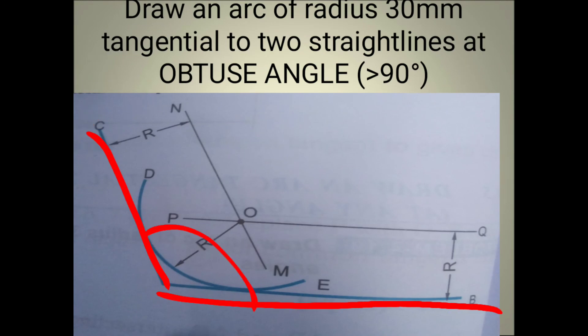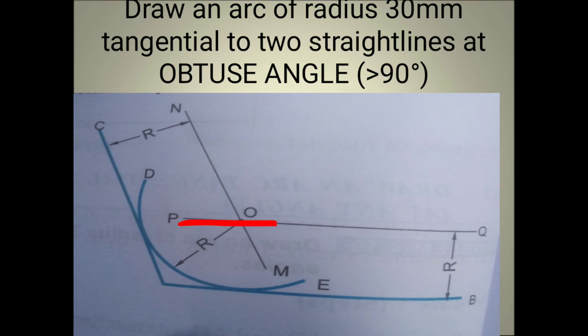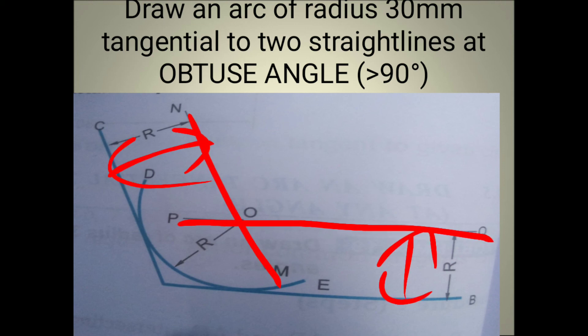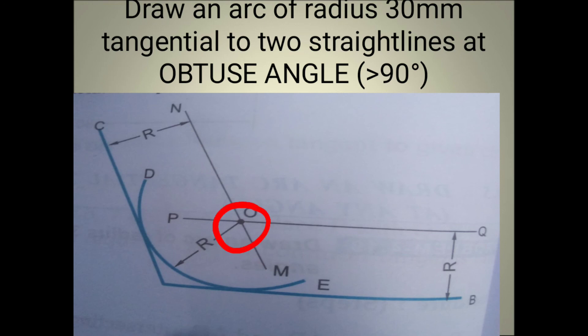For two straight lines having an obtuse angle above 90 degrees: draw parallel line PQ and NM line at the distance of the radius, 30 mm. The two parallel lines meet at point O. With point O as center and radius equal to 30 mm, draw an arc which touches the two straight lines. This is called the obtuse angle tangential arc. This is very important: 90 degrees, acute angle means below 90 degrees, obtuse angle means above 90 degrees — draw a tangential arc.